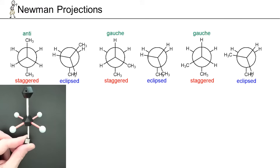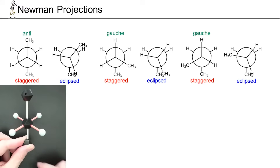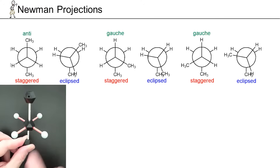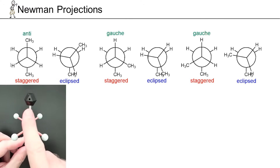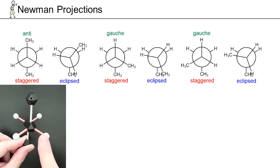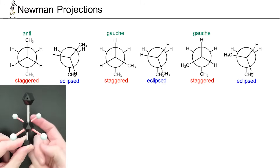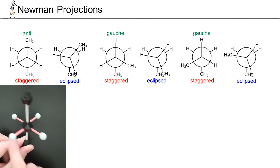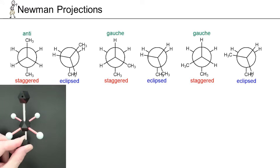In this case, this would correspond to what's called the anti-conformation. It's a special type of staggered conformation — you can see why they call it staggered, because the three bonds coming off the front carbon are exactly in between the three bonds coming off the back carbon, hence that's a staggered conformation.